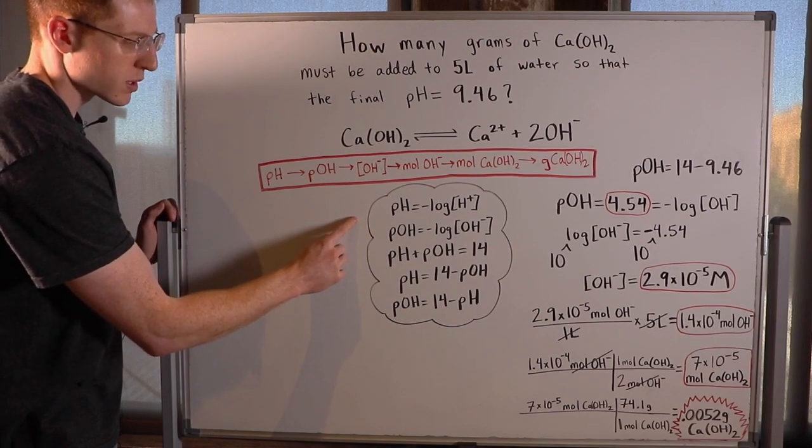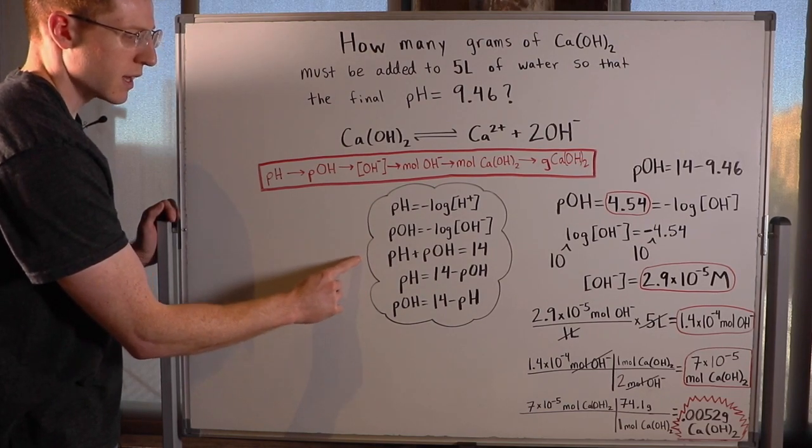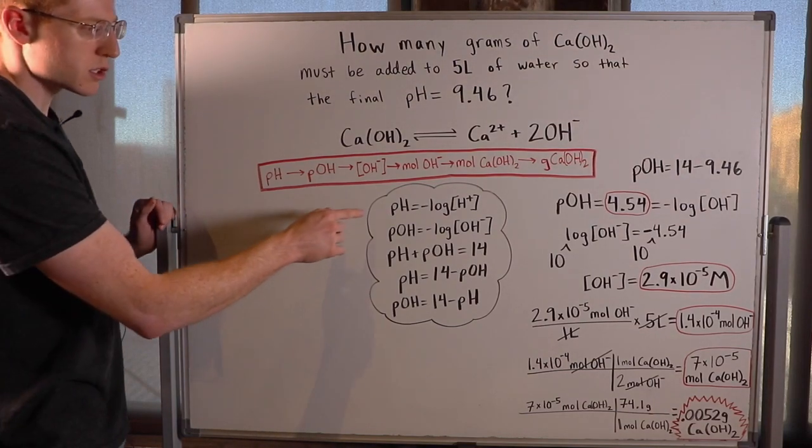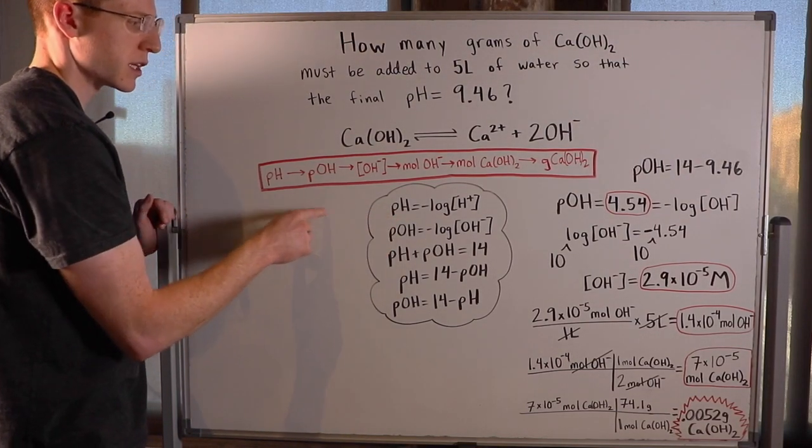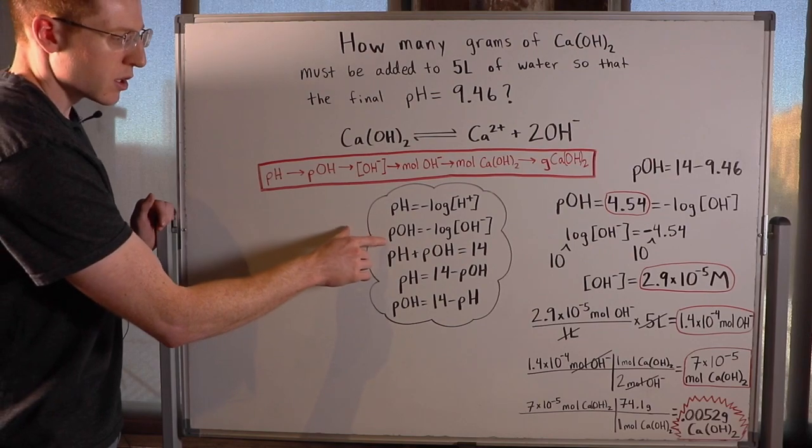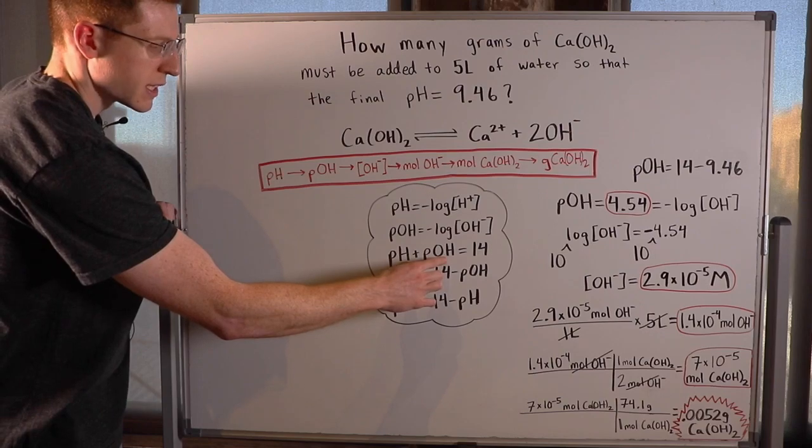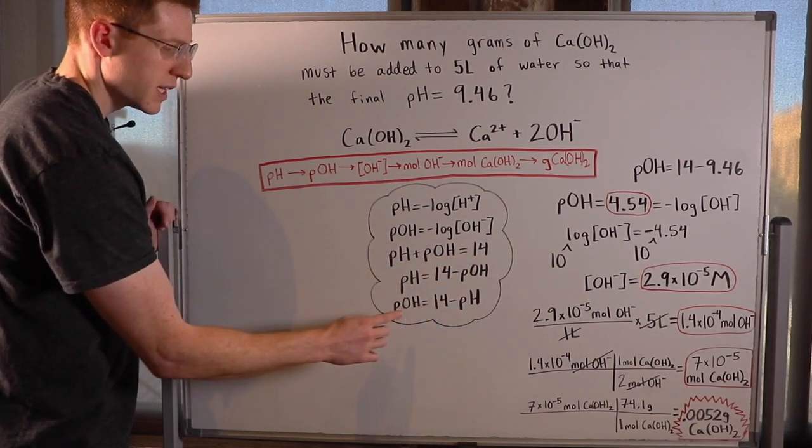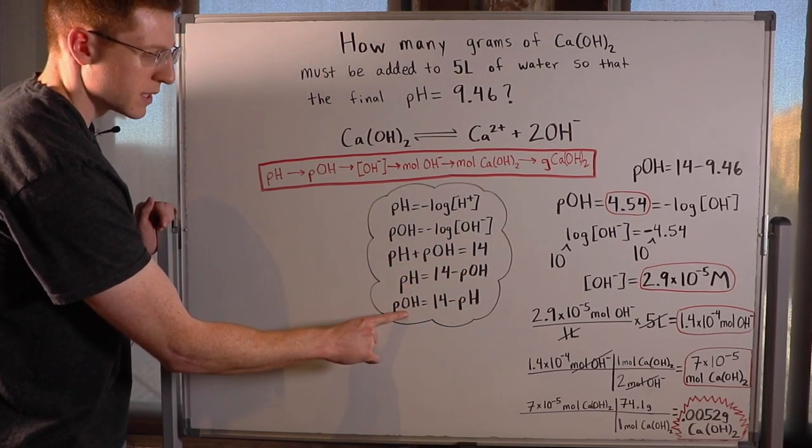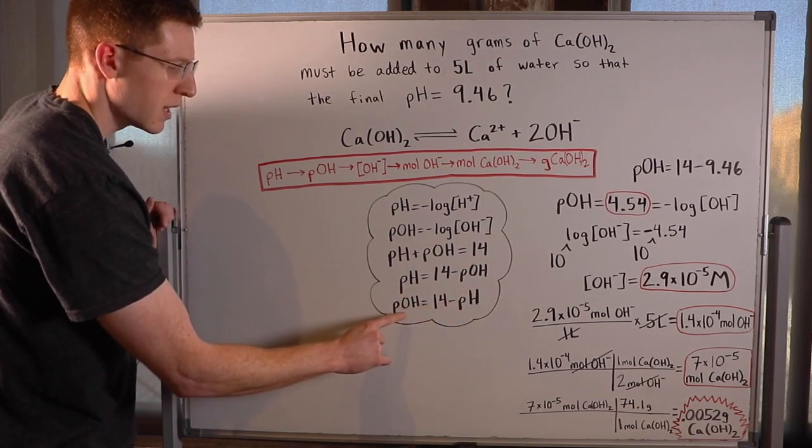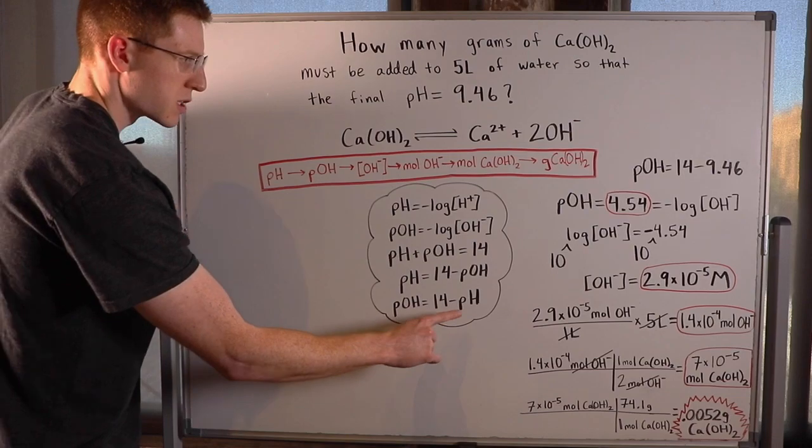I've got an important list of equations bubbled in here that you should know and use for almost every pH problem. So we know pH is equal to the negative log of the H plus concentration. pOH is equal to the negative log of the hydroxide concentration. We know if we add together pH and pOH, we get 14, and thus we can isolate pH and pOH. pH is 14 minus pOH, and pOH is 14 minus pH.